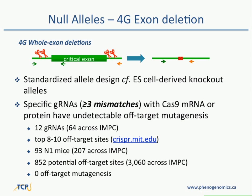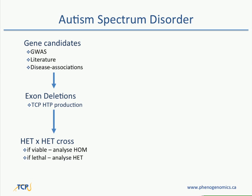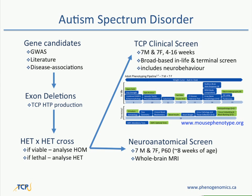We used mice produced in our TCP program and collaborated with the POND Network in Toronto, which is looking for genes involved in autism spectrum disorder. Their candidate genes are selected by GWAS studies, literature scans, and disease associations. They give those gene candidates to us, we make exon deletions in our high-throughput production pipeline, do heterozygous by heterozygous crosses once a good N1 is identified. If viable, we analyze homozygous mice; if lethal, we analyze heterozygous through our clinical screen. Jason Lerch and colleagues at the Mouse Imaging Centre at SickKids then put these mice through a neuroanatomical screen — whole brain MRI as well as MRI of the rest of the mouse body.